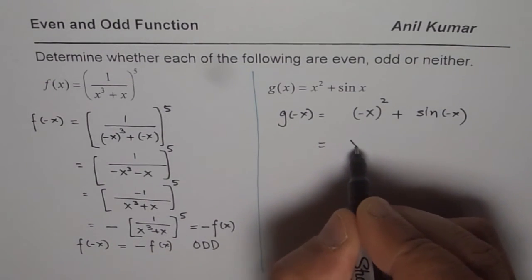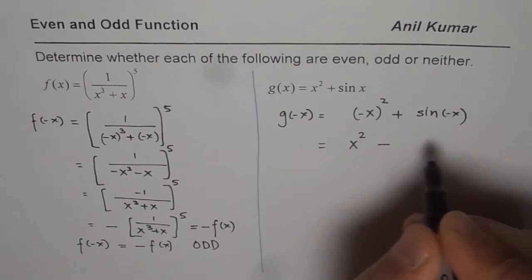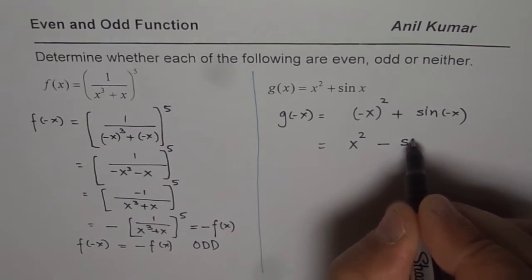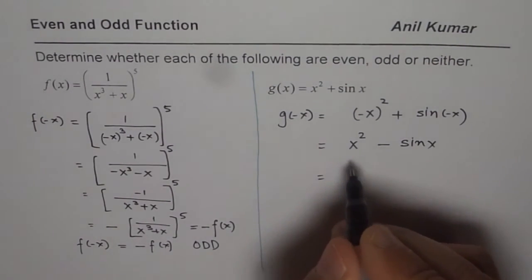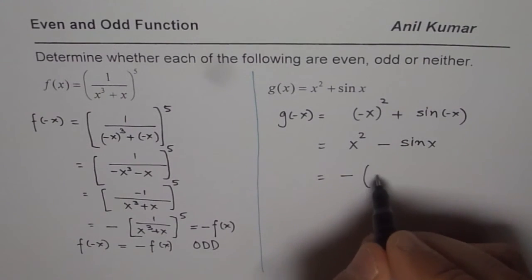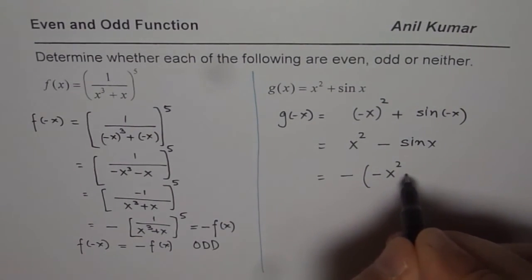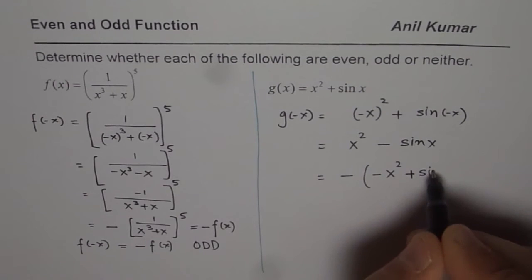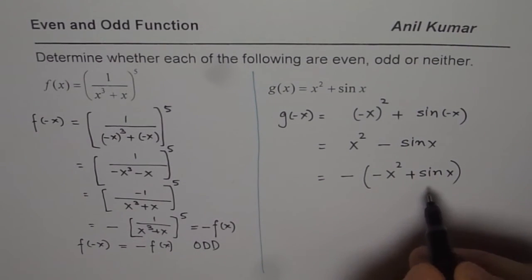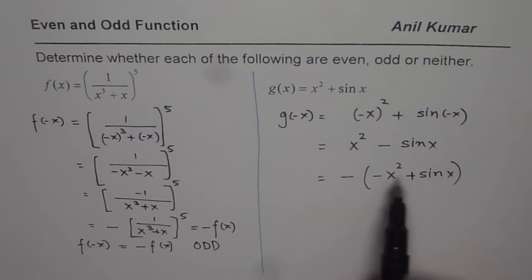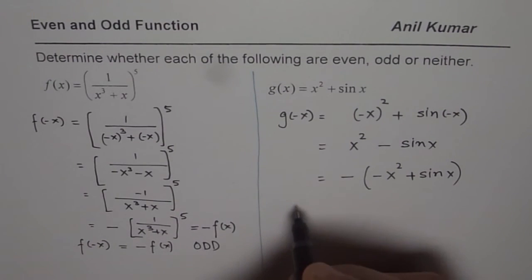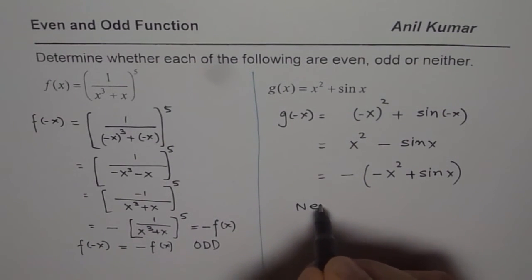Now, minus x whole square is x square, whereas sin of minus x is minus sin x. You can clearly see, if I take minus outside, I get minus x square plus sin x. Now, this is neither equal to g of x nor is it equal to minus g of x. And therefore, we say this function is neither.